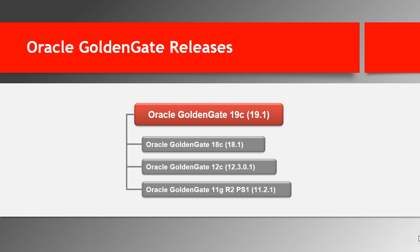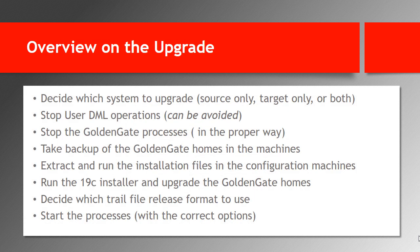In this tutorial, we are concentrating on upgrading Oracle GoldenGate from 12C to 19C. At a high level, the upgrade goes through the following steps. First, you need to decide which systems will be included in the upgrade. Normally, we care about upgrading both the source and target systems. However, in some special cases, you might be interested in upgrading only the source system or only the target system. For example, if the target system is not under your control or is in a different entity, you might upgrade the source system only. This decision will affect the upgrade steps later.